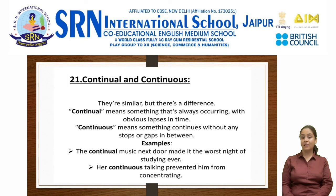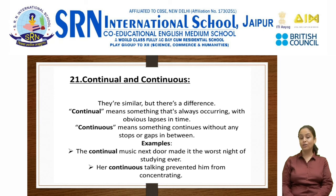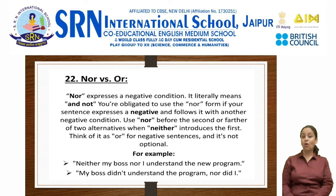Let's move on to the next error: continual and continuous. They are similar but there's a difference. Continual means something that is always occurring with obvious lapses in time. Continuous means something ongoing without any stops or gaps in between. For example: the continual music next door made it the worst night of studying ever. And her continuous talking prevented him from concentrating.